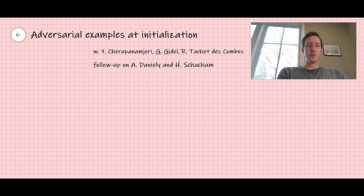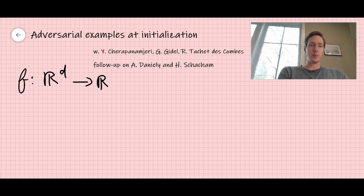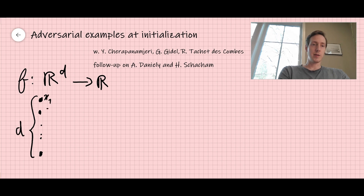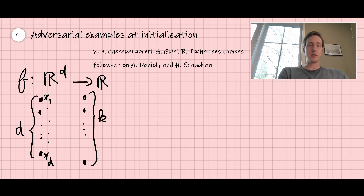Let me tell you what is the setting. We're going to consider a two-layer neural network — a function f from R^d to R. You can represent it pictorially as follows: you have the input x, which I'm going to represent as d nodes, one for each coordinate — x1, et cetera, up to x_d.